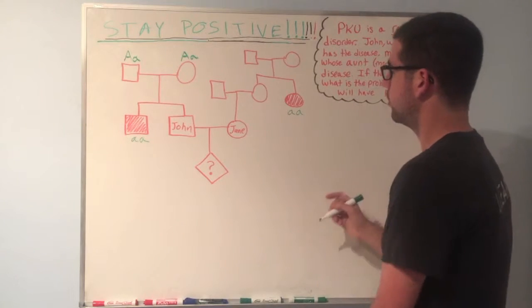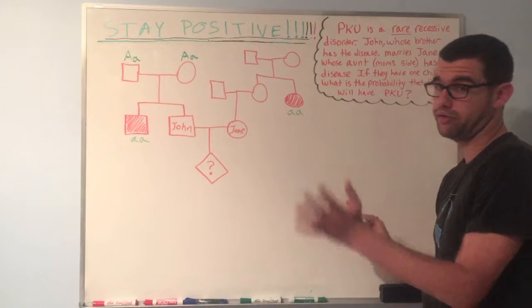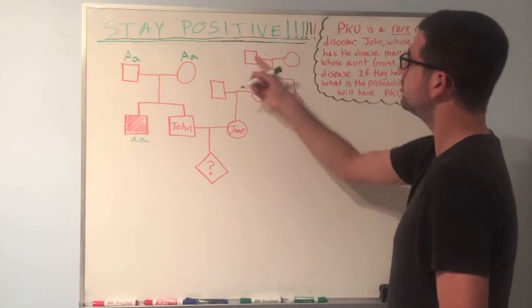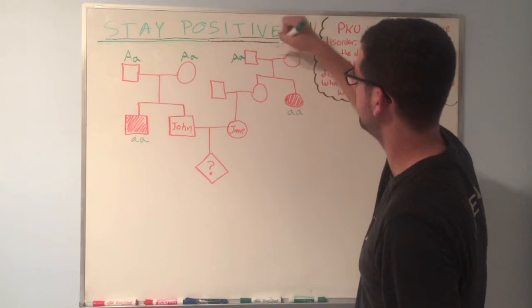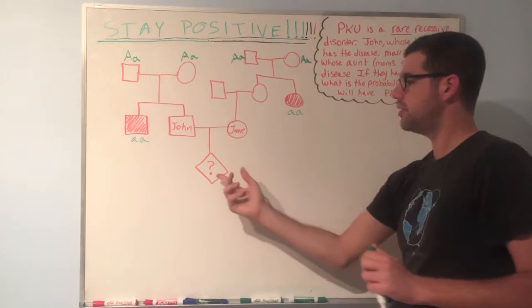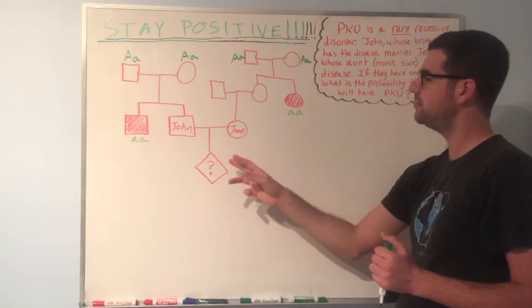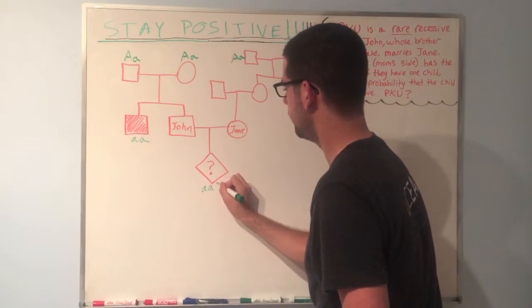Now there's more we can infer from this. In order for two unaffected individuals to produce an affected child, they must both be carriers. So we know that John's parents must be heterozygous, big A little a and big A little a. What else can we infer? Again, we have two unaffected parents, which we can assume they're unaffected because it's not stated in the problem, producing an affected child, they too must be big A little a and big A little a. Heterozygous. Those are the parents. So we're trying to look for the probability that this guy right here or girl will be little a little a. Little a little a question mark.